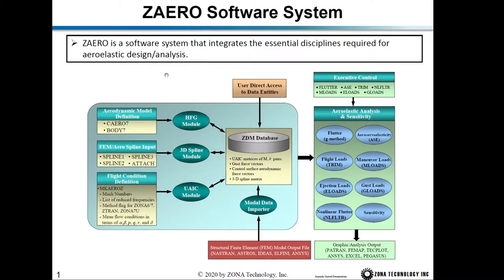ZAERO is a software system that integrates all the essential disciplines required for aero elastic design and analysis. At the center of ZAERO is a database management system we call ZDN. All the modules in ZAERO do not communicate with each other directly. Rather, they generate data entities and the next module retrieves those data entities and generates new data entities.